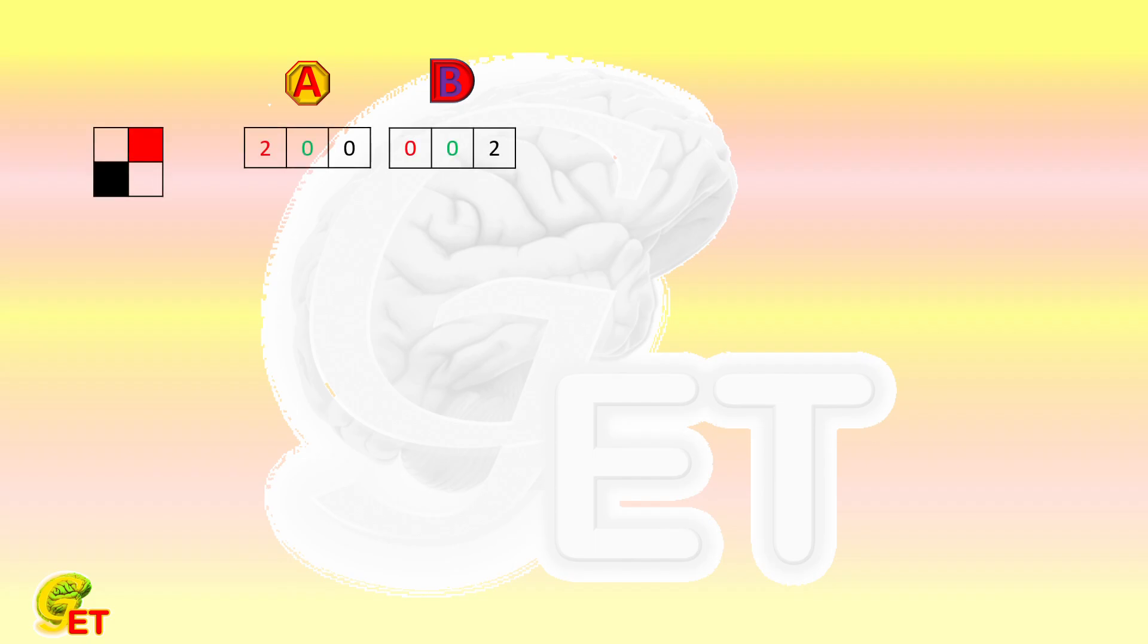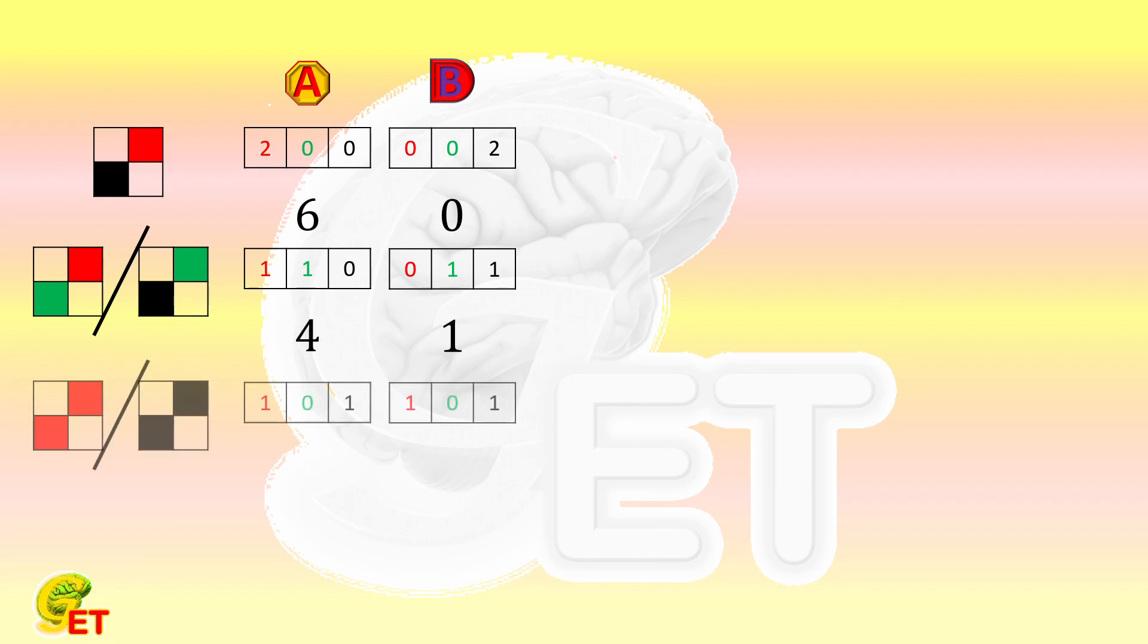So the 2 teams end up with 6 and 0 points respectively. The first team has 1 win and 1 draw, so they end up with 4 and 1 points respectively. Both teams win 1 game each and end up with 3 points each. Both games were tied, and the final points are both 2.